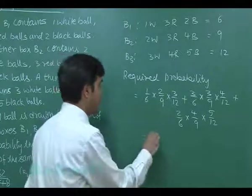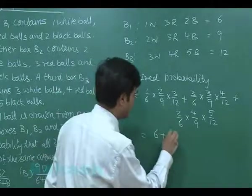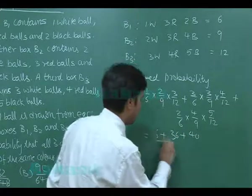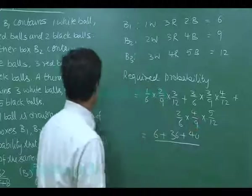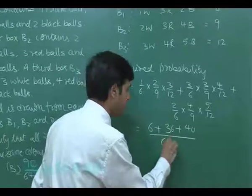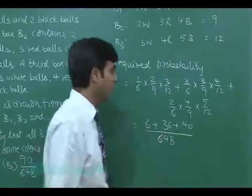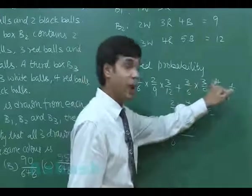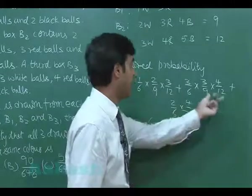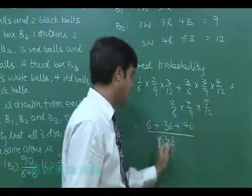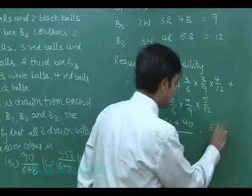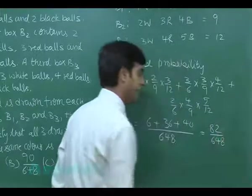This is the required probability which can be simplified as 6, 36 and 40 divided by total in denominator that is simply 6, 48. We can cross check it simply that is 6, 12, 3 is 36 here and 40 the third one divided by this is 12, 9 is 108, 6 times 6, 48. Finally, we obtain this one as 82 divided by 648.